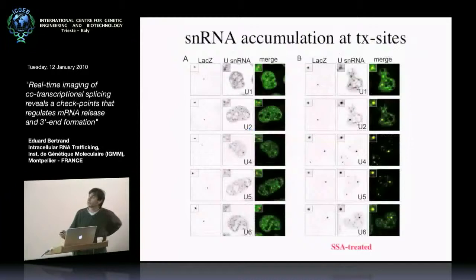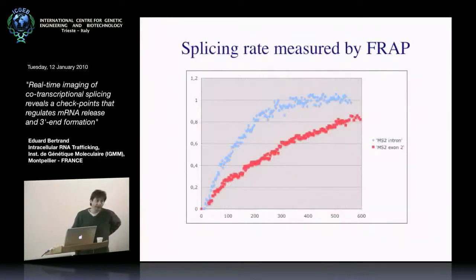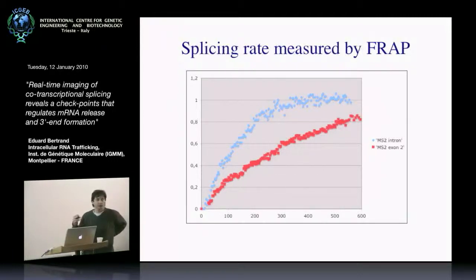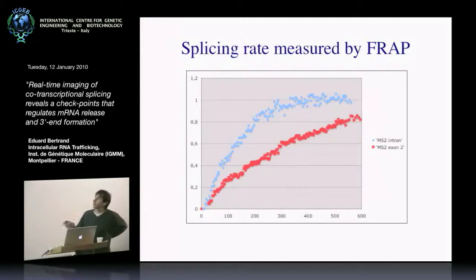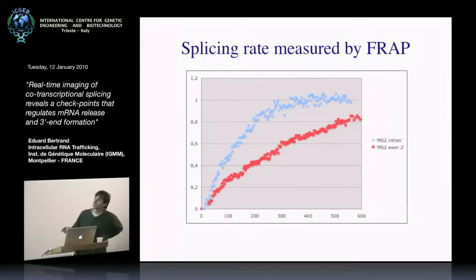To analyze the kinetics, we transfected MS2-GFP into the cell line and used FRAP experiments at the transcription site to measure the recovery of MS2-GFP, which corresponds to the turnover of the intron. What we measure is the residency time of the intron at the transcription site. Comparing the intron-containing construct to the exon 2 construct, you can see the intron remains a shorter time at the transcription site, confirming it's likely removed and degraded before the RNA leaves the transcription site. You can see that splicing occurs in something like 3 to 4 minutes.